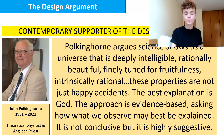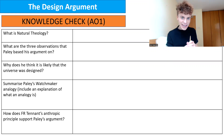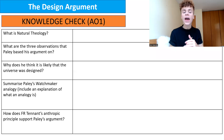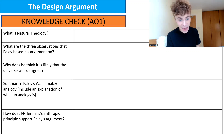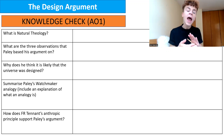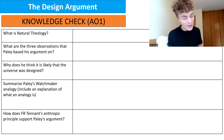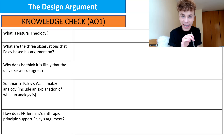A quick knowledge check: what is natural theology? What are the three observations Paley based his argument on? Why does he think it is likely the universe was designed? Have a go at summarizing his watchmaker analogy, and explain how Fr Tennant's anthropic principle supports Paley's argument. You might want to pause the video and print off this slide.